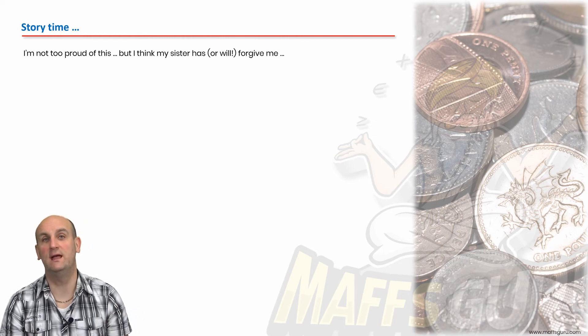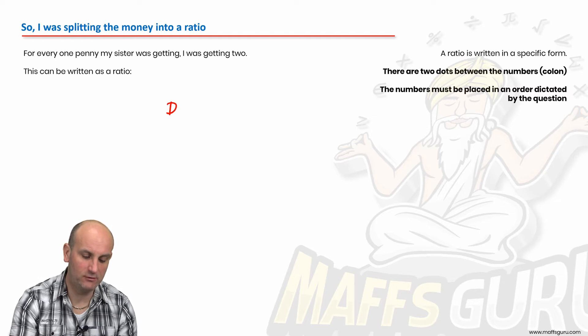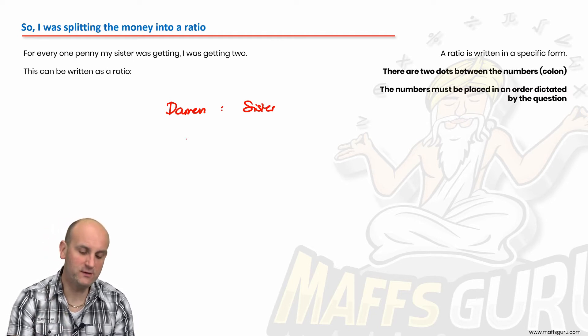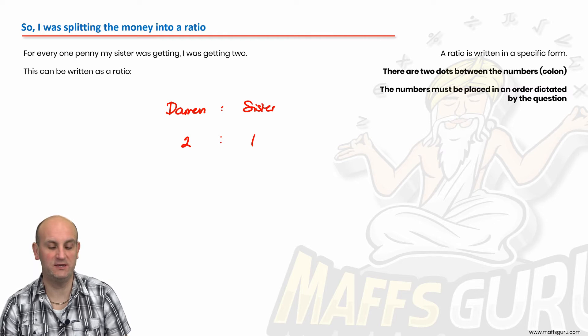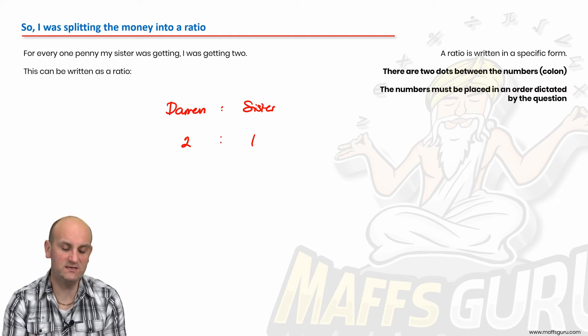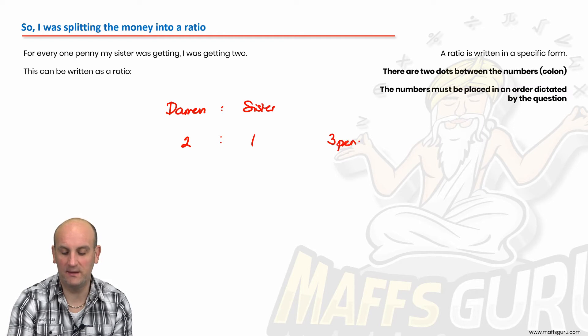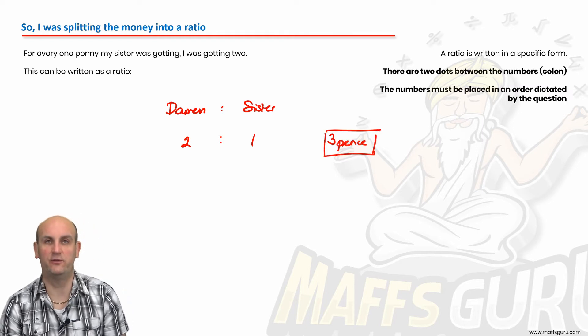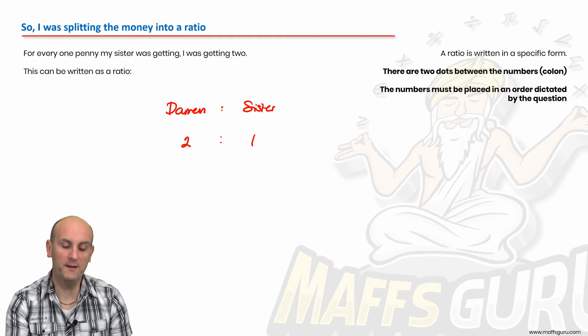I defrauded my sister at a young age. Now basically what I was doing there, believe it or not, was splitting money into a ratio. I was basically getting two pennies and she was getting one penny for each one. So if I was to say Darren and I will say sister to save her blushes, then what I was getting was, notice the two dots, for every two pence I was getting, my sister was getting one pence. I was splitting things in a ratio of 2:1. I was getting twice as much as my sister was. It's really important to notice that every time I was taking money out of my nan's purse, I was taking out three pence. So adding together these ratios is going to be really helpful in a later video.